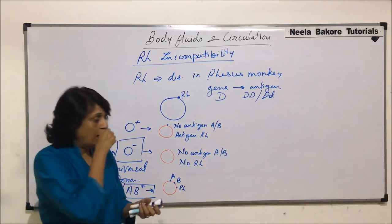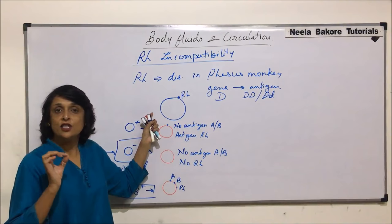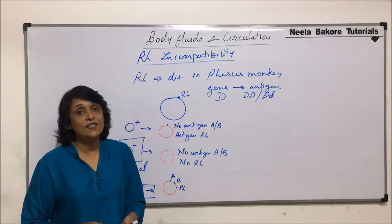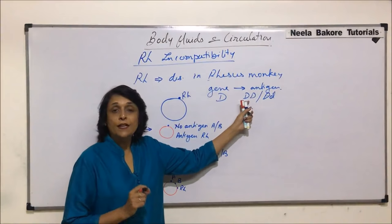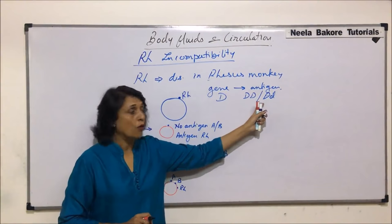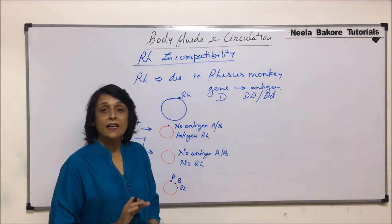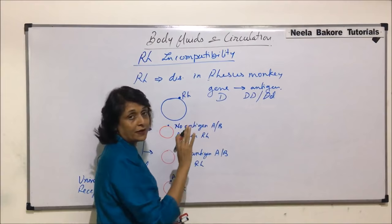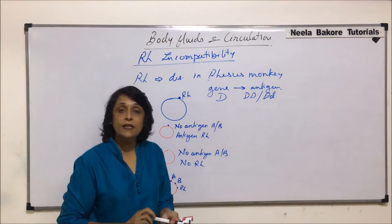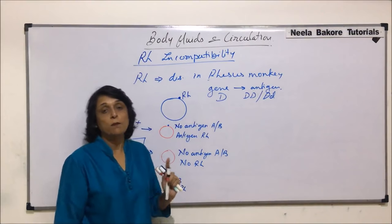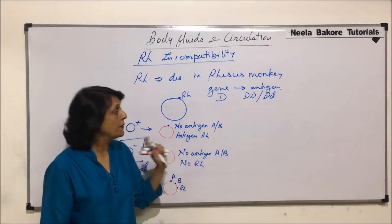If RH is present, we call it positive; if RH is absent, we call it negative. If the gene D is present in homozygous dominant or heterozygous form, then the person would be called RH positive. If this gene is absent — meaning the person has recessive genes — we will call it RH negative. Majority, about 80 to 85 percent of people, are RH positive.